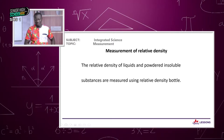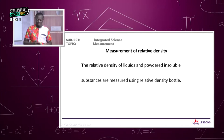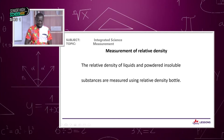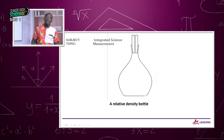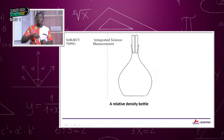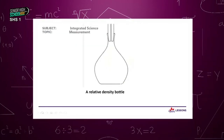We now move on to how to determine the relative density of a given substance. The relative density of liquids and powdered insoluble substances is measured using the relative density bottle. On screen we have a picture of it — a beautiful glass bottle with a ground glass stopper that has a fine hole, allowing excess liquid to drain out when stoppered.